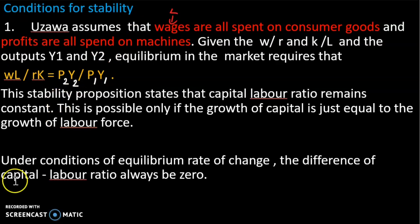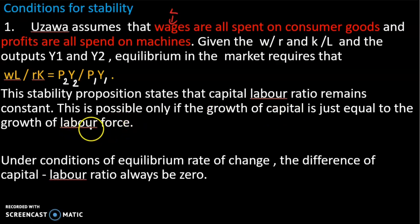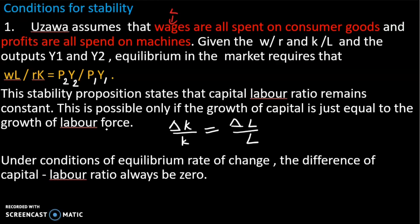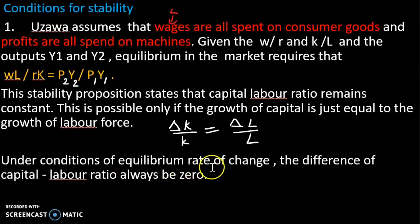The second concept is steady growth. The capital-labor ratio is constant. This is possible when the growth of capital equals the growth of the labor force: delta K divided by K equals delta L divided by L. Under conditions of equilibrium, the rate of change of the capital-labor ratio is zero.